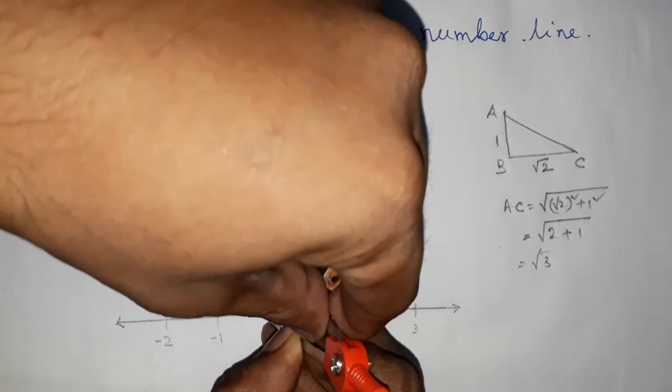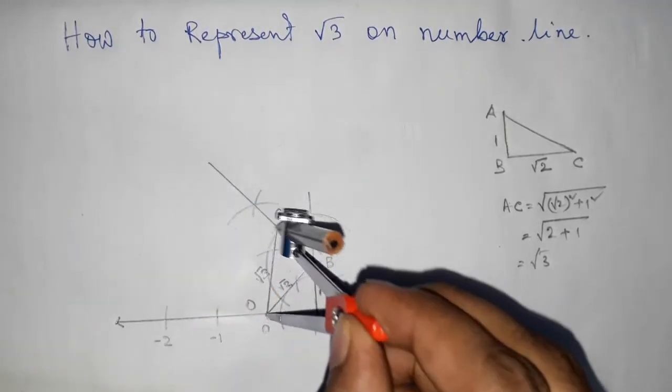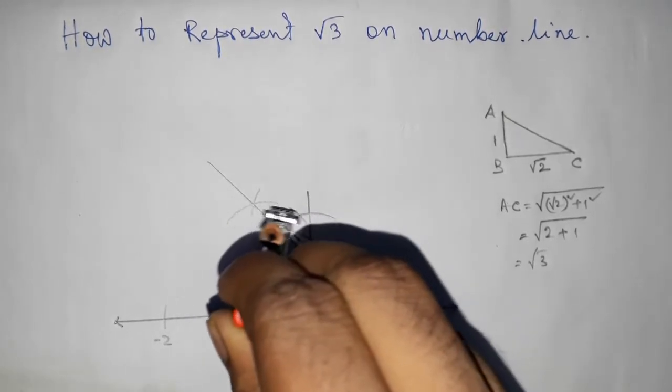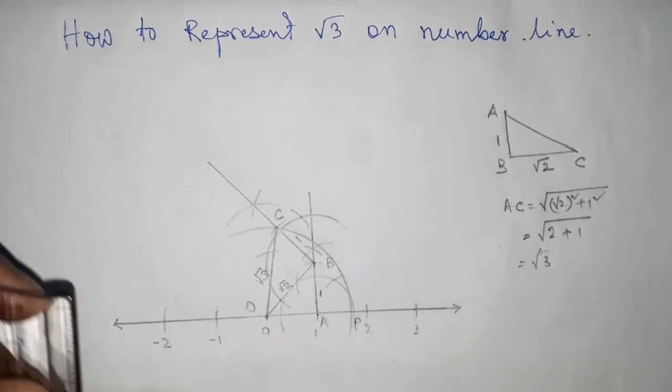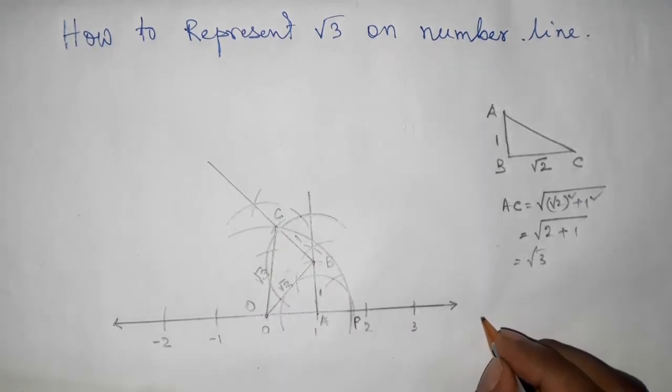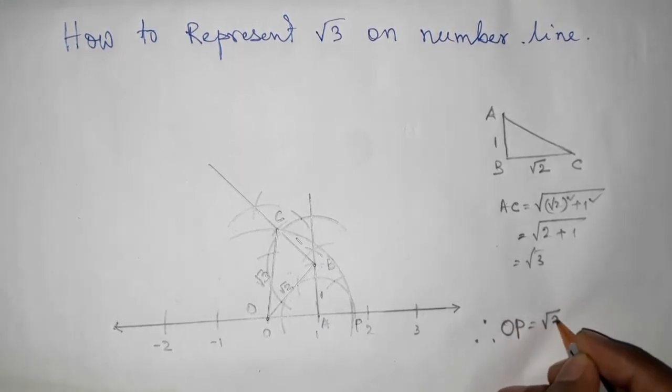Now taking the length by compass and drawing an arc which cuts the number line at a point which is P. So OC and OP are the same, equal. Therefore OP equals root 3.